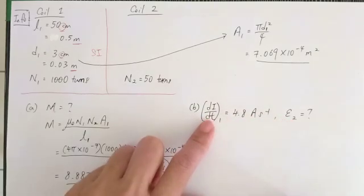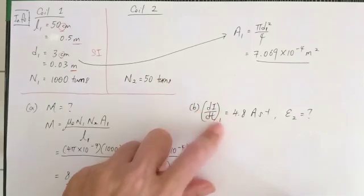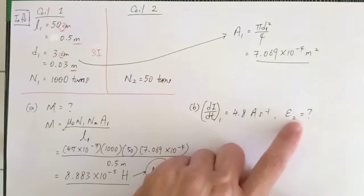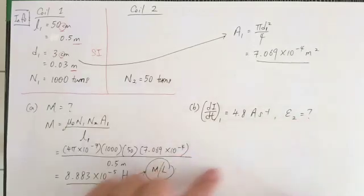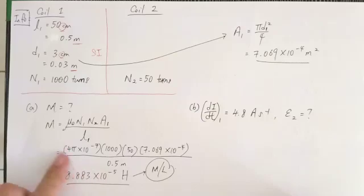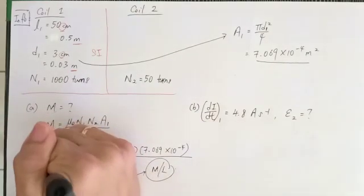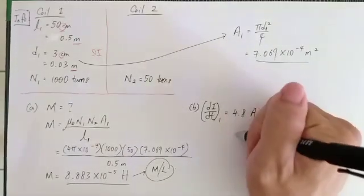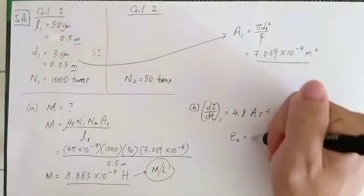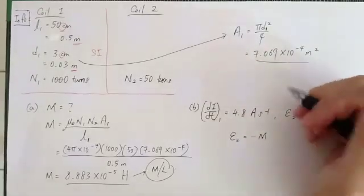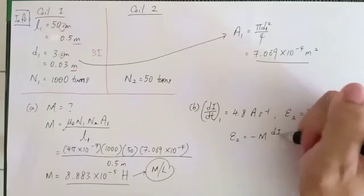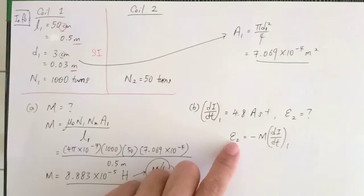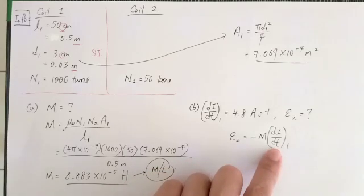For part B, we find the EMF generated in the secondary coil, E2, given the rate of change of current in coil one. The changing current in coil one induces an EMF in coil two. Use the formula E2 = −M · (dI1/dt).